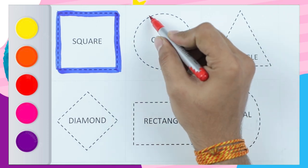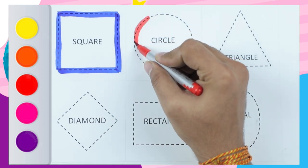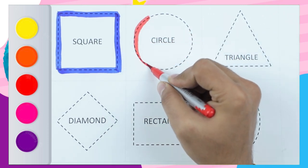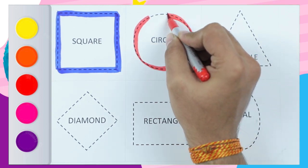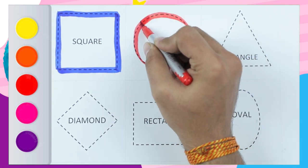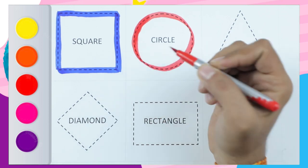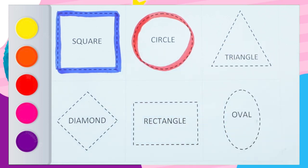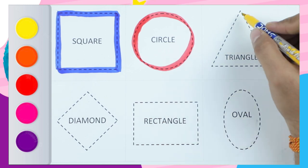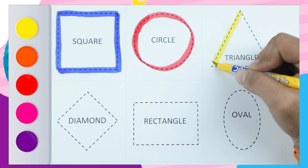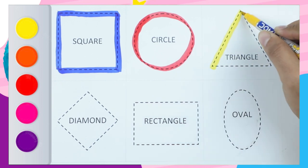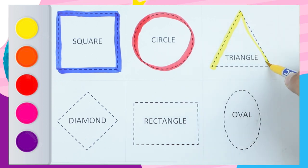Circle — red color circle. Wow, it's a circle! Red color circle. Yellow color triangle — sliding line, sliding line.